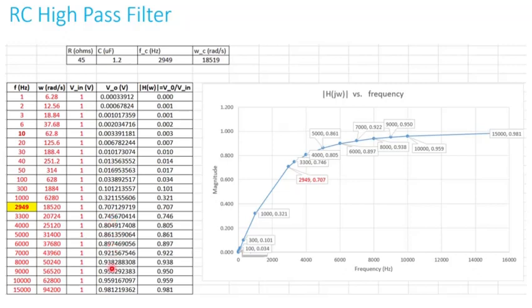...the output voltage is almost the same as the input voltage. That means this RC high-pass filter almost passed the entire input signal. Graphically, you can see the cutoff frequency at 2949 Hz.